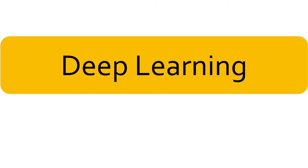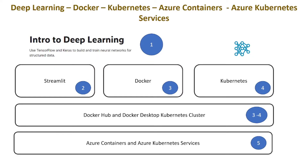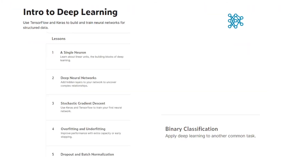Next is an intro to deep learning, which I do with a Kaggle Learn course. We will develop a deep learning model and deploy it in Docker and Kubernetes, as well as in Azure Containers and Azure Kubernetes Services. We will also learn how to expose it with a Streamlit UI. The intro to deep learning has six theory lessons with six practical cases: a single neuron, deep neural networks, stochastic gradient descent, overfitting and underfitting, dropout and batch normalization, and binary classification.